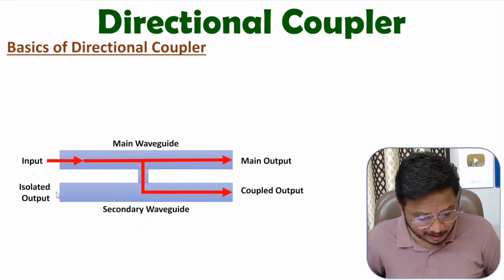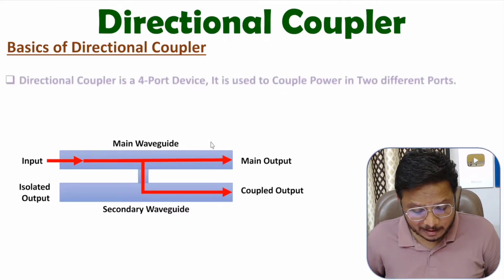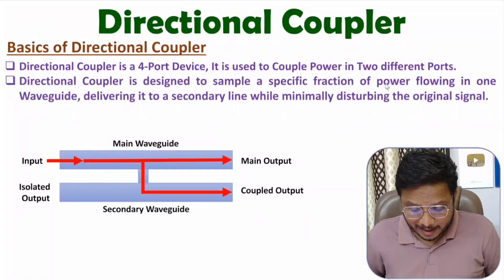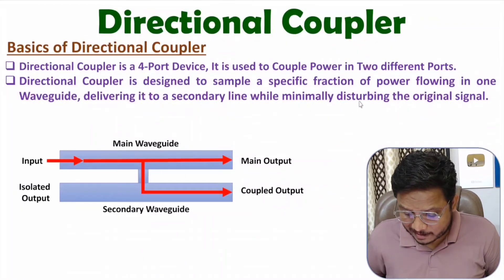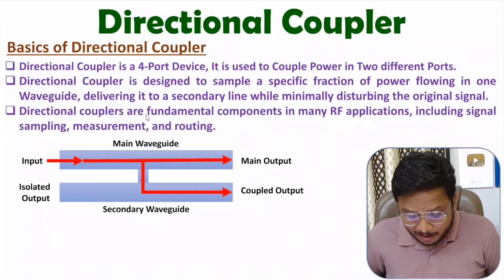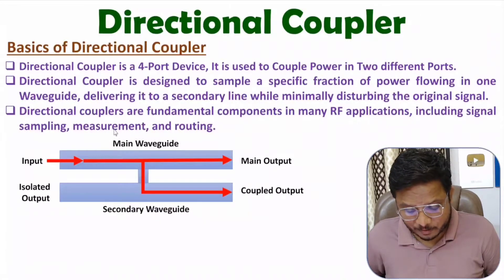One more feature of the directional coupler is that we also have an isolated output port, which is isolated with respect to the input port. So the basic function of a directional coupler is to couple the input signal to two different ports — it is a four-port device used to couple power in two different ports. The goal is to couple power from the main waveguide to the secondary waveguide without disturbing the original signal. These are fundamental components in many RF applications including signal sampling, measurement of RF devices, and routing of signals.